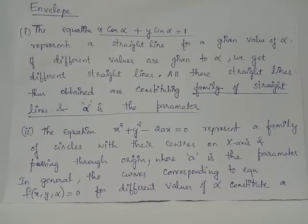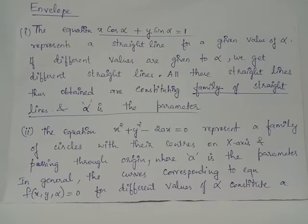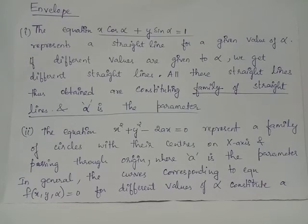Example 2: The equation x² + y² − 2ax = 0, where a is the parameter, gives different circles when you change the value of a. All these circles constitute a family of circles with their centers on the x-axis, and these circles pass through the origin. So x² + y² − 2ax = 0 represents a family of circles.